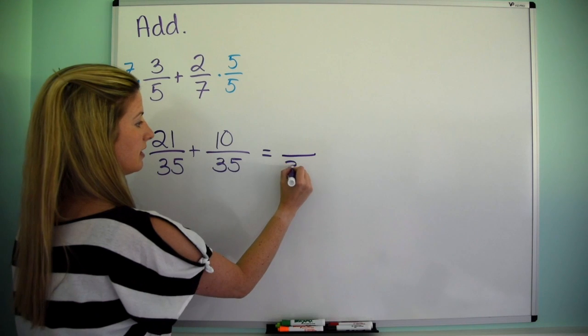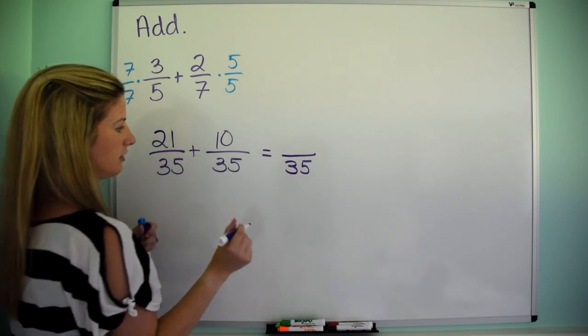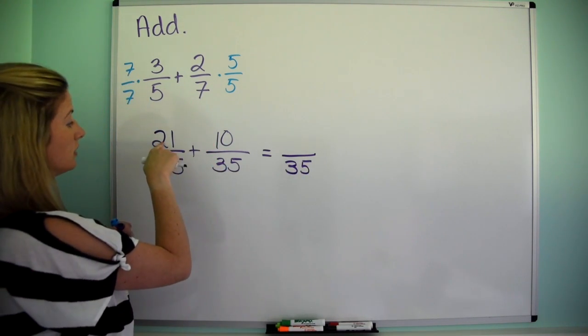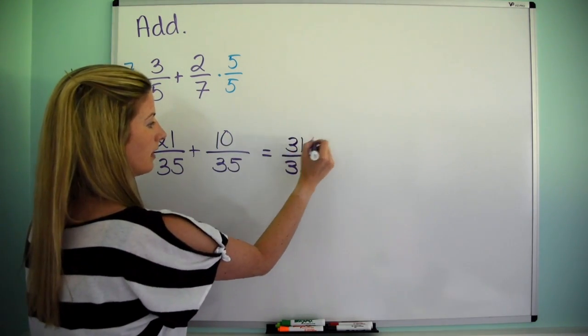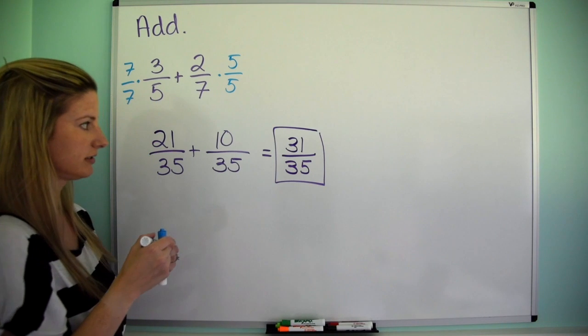Now, because we have the same denominator, the denominator of our answer will be 35, and we just add the numerators. So 21 plus 10 is 31. Perfect. There is your answer.